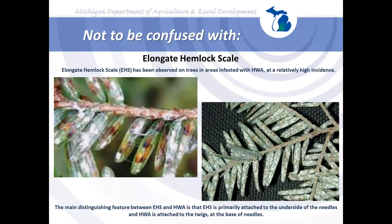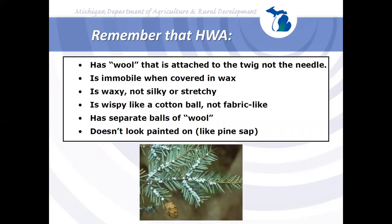Additional lookalikes include spider egg sacs and elongate hemlock scale, a non-native insect that is less devastating than HWA but commonly found in the same survey areas. The key distinguishing feature is that elongate hemlock scale attaches to needles, not twigs. For HWA: the wool attaches to the twig; once the woolly mass forms, the insect is no longer mobile; the mass is waxy and wispy like a cotton ball—about the size of a quarter of a Q-tip tip—not silky or stretchy like a spider egg sac, and not painted-on like pine sap or bird droppings.